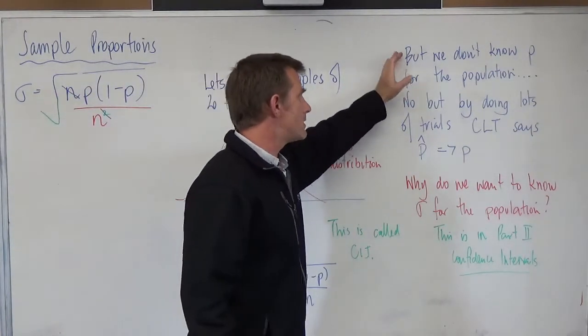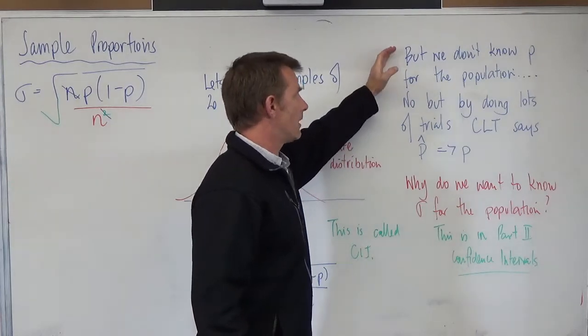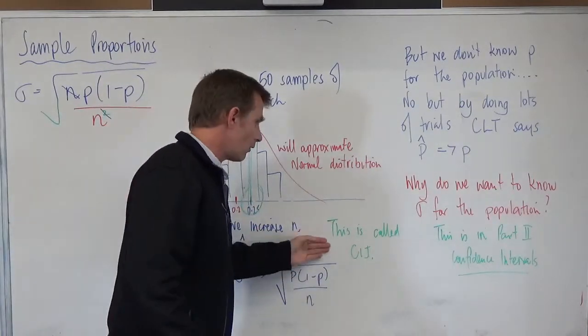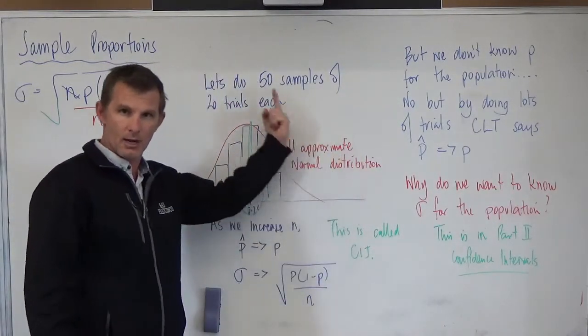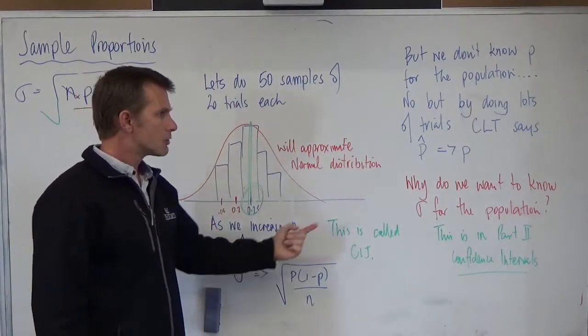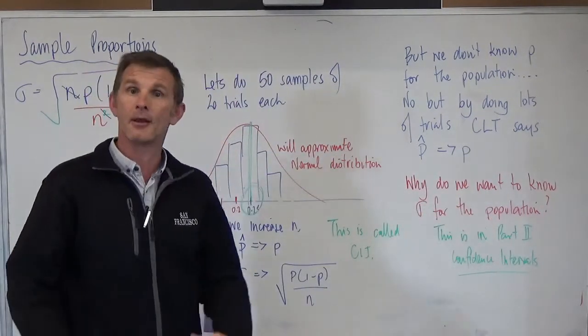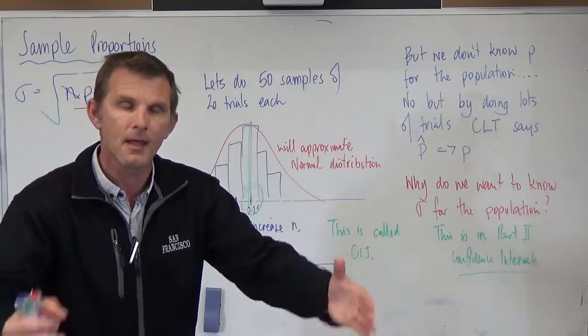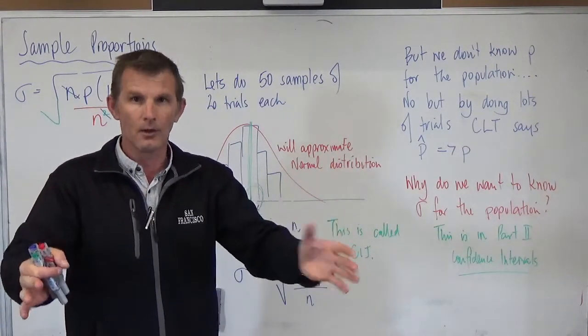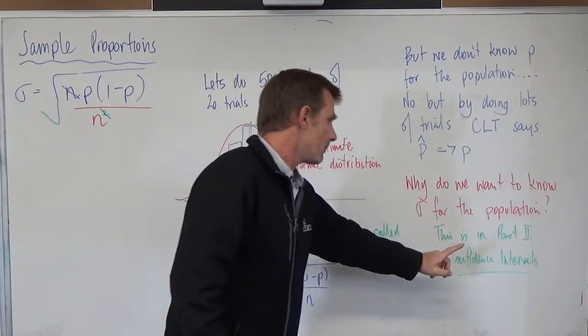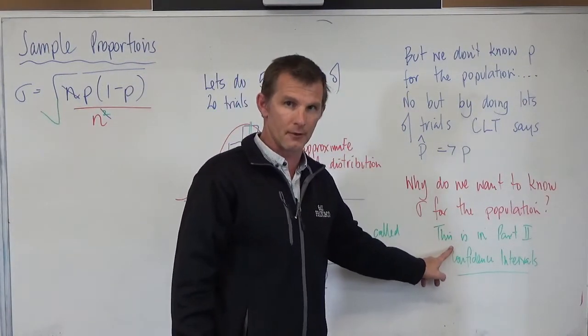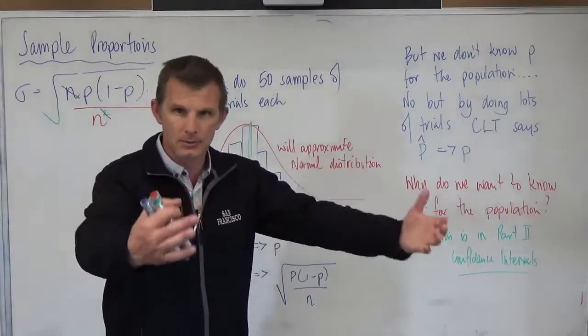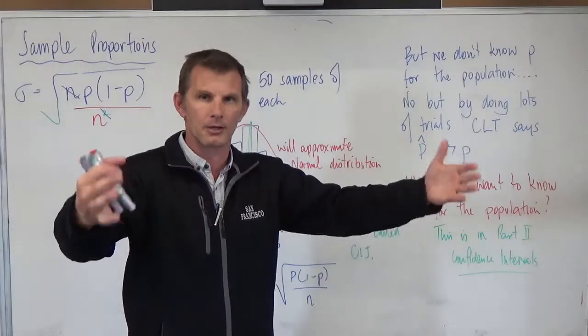Now, key question. But we don't know the proportion for the population. Well, no, we don't. But that's the whole idea of understanding where all this comes from. So why do we want to know the standard deviation for the population? Well, that allows us to make predictions about the population and where things are likely to fall. Don't want to jump into the next video yet. But that will be part two talking about confidence intervals. When we use this information here and we actually make predictions about the population or where the population is likely to be.